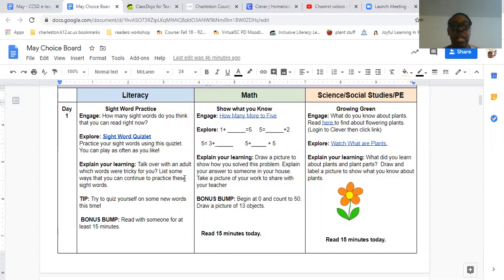So for literacy today, you are to how many sight words do you think you can read? You're going to do that. You're going to practice your sight words using this Quizlet, and you can play as often as you like. Talk over with an adult which words are tricky for you. Let them know which words you're having trouble with and then list some of the ways you can continue to practice these words. Then quiz yourself and then read with someone for 15 minutes.